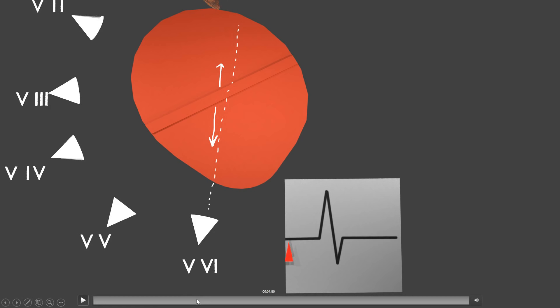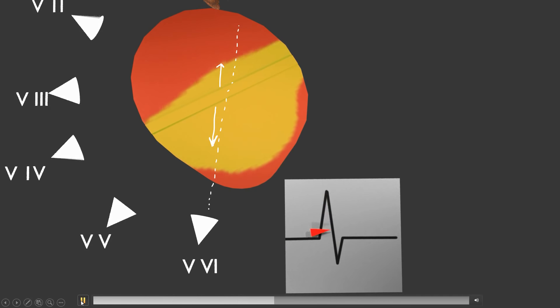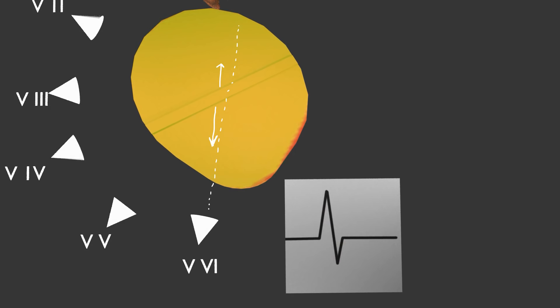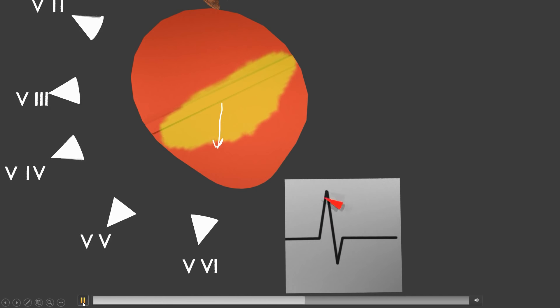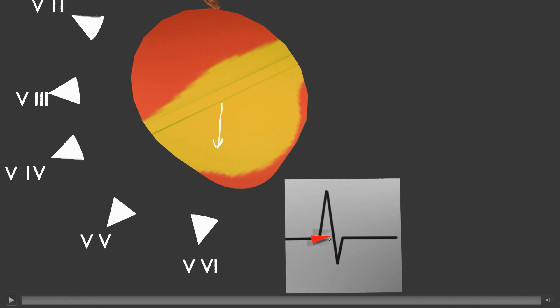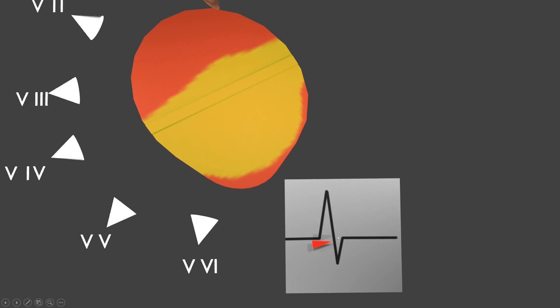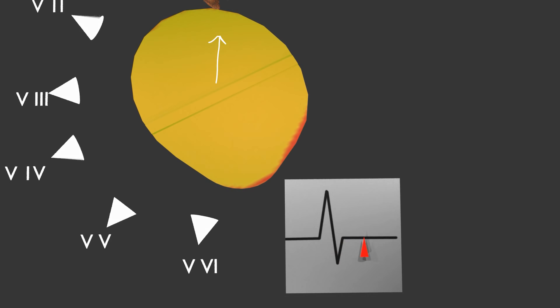If we look at this depolarization, just like last time, we see it starts in the interventricular septum, moves to the left ventricle, and then through the right ventricle. If we isolate the upward spike, that's going to correspond to electricity moving towards V6. Then at the inflection point, we're going to see it moving away from V6. Using this method of looking at the EKG and where the electrodes are placed, you can predict where electricity is moving throughout the heart — upward means moving towards that lead, downward means moving away.